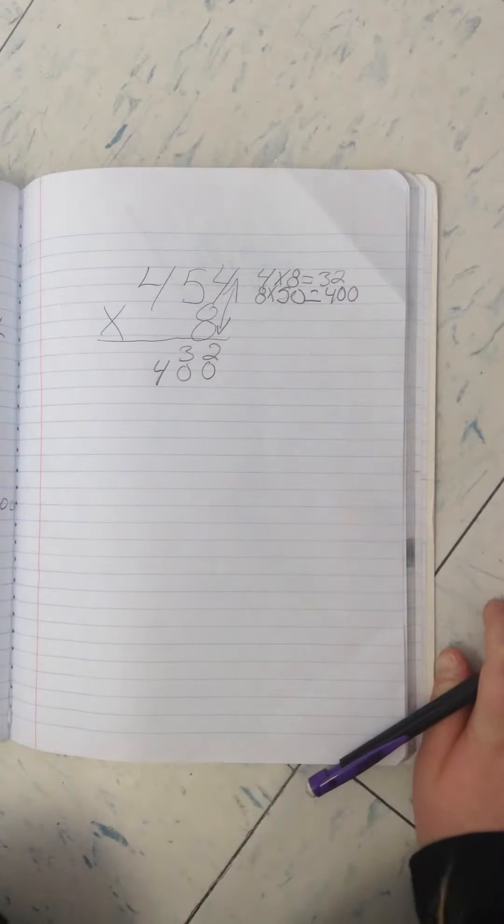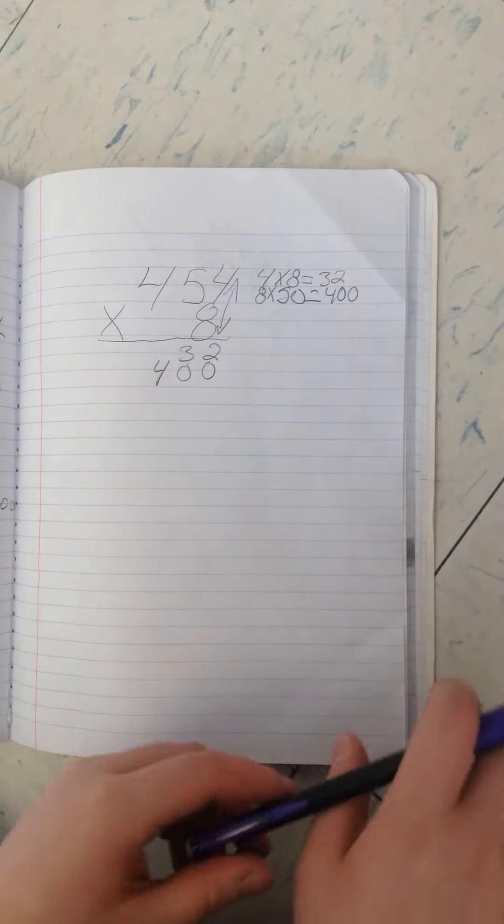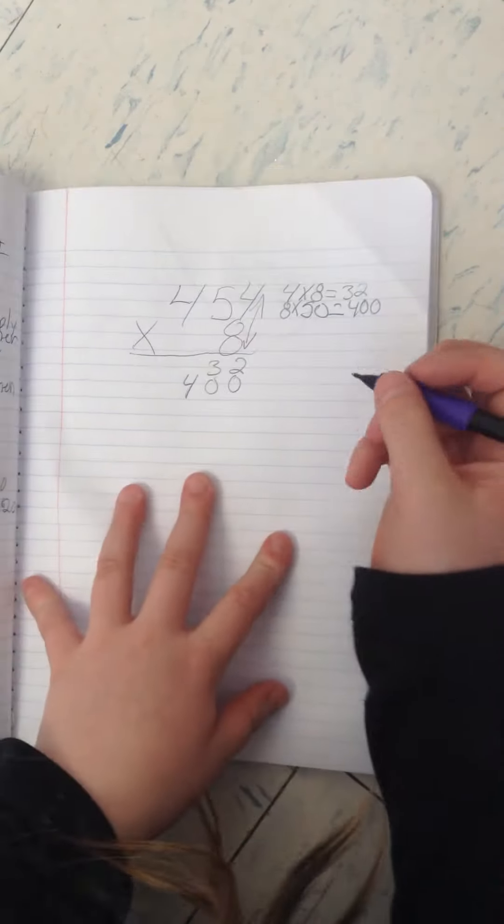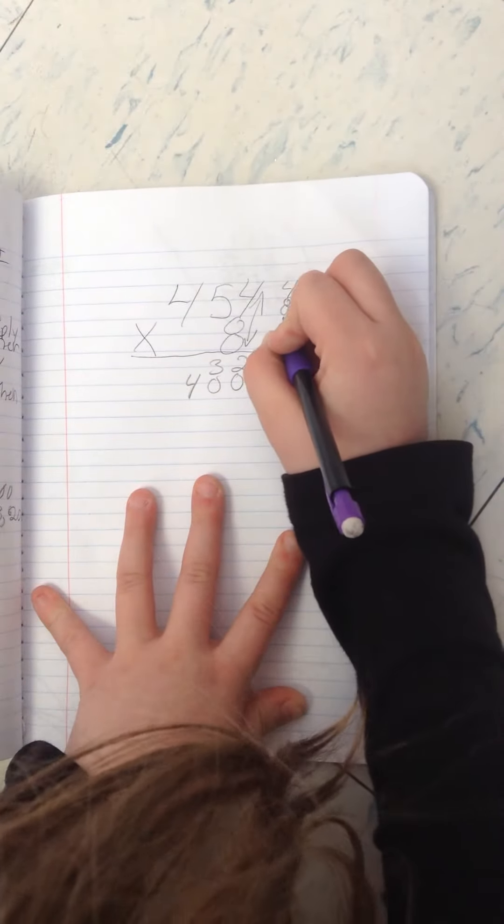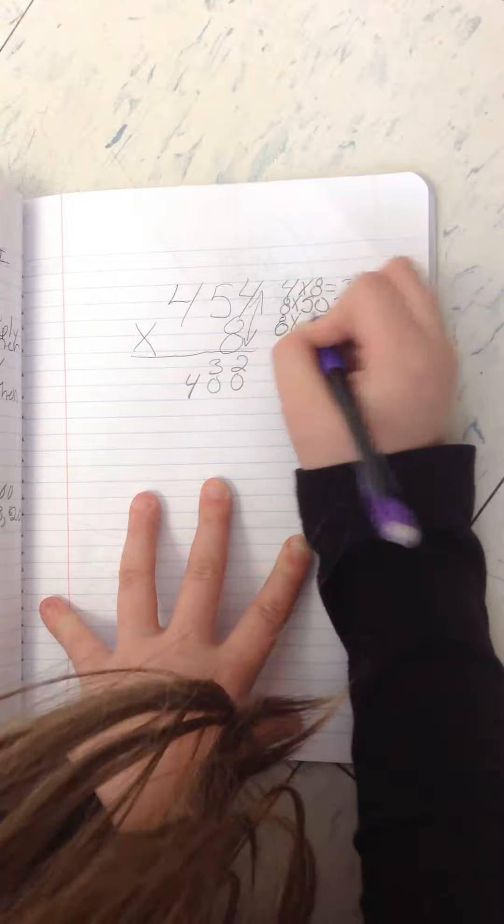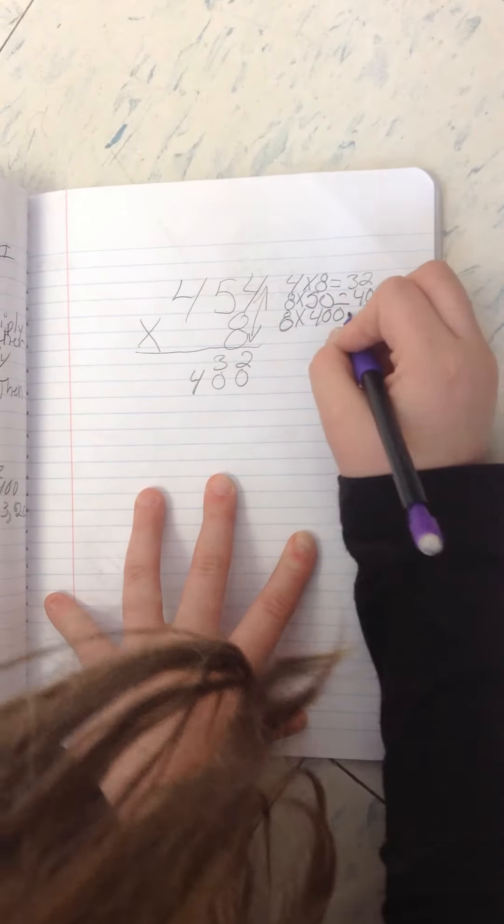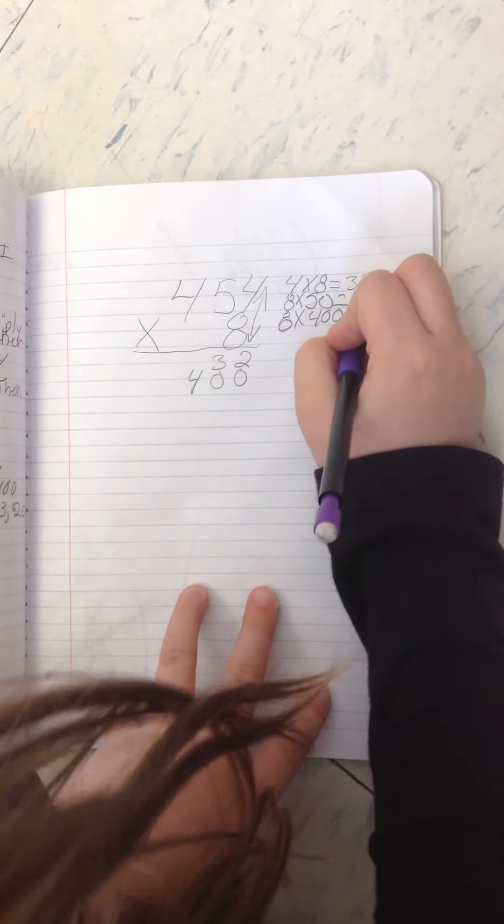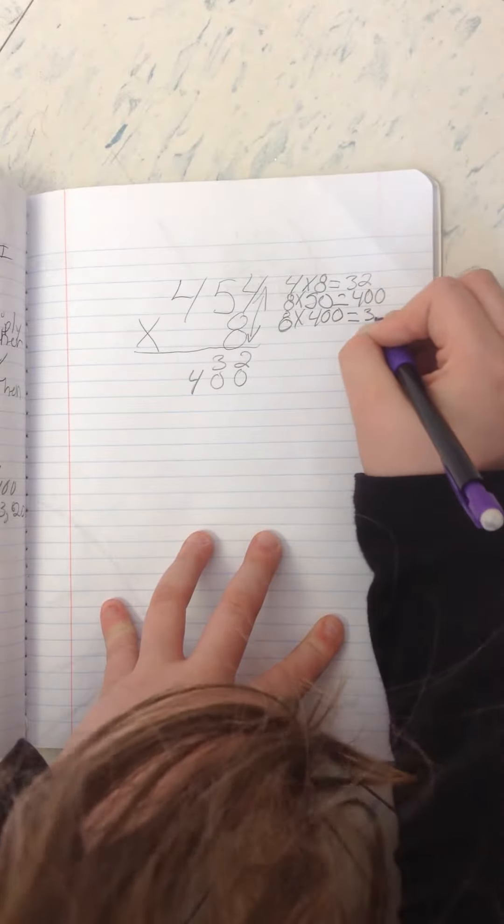And then, then you multiply 8 times 400 and that equals 3,200.